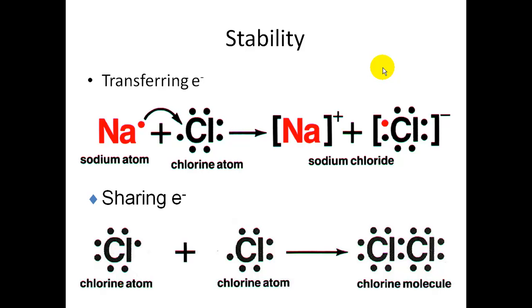The other way that atoms become stable is by sharing electrons. Chlorine atom has seven valence electrons. They will share these two electrons together and form a bond. For example, a chlorine molecule.